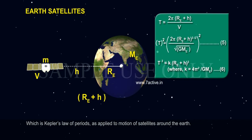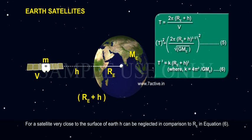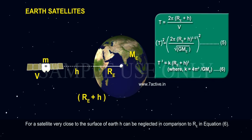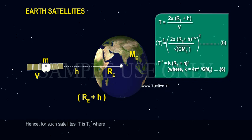This is Kepler's law of periods as applied to motion of satellites around the Earth. For a satellite very close to the surface of Earth, H can be neglected in comparison to RE in equation 6.